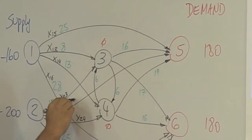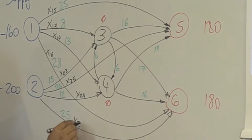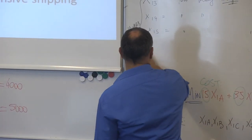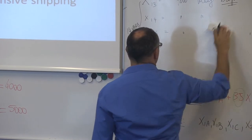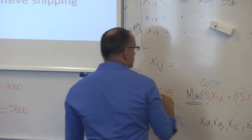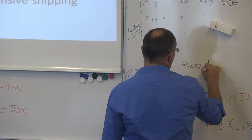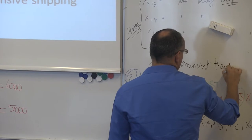In general, let's just say X_ij equals the amount transported from node i to node j.